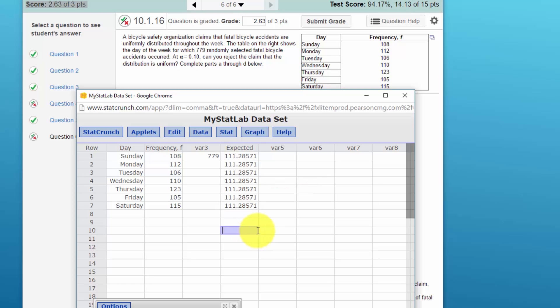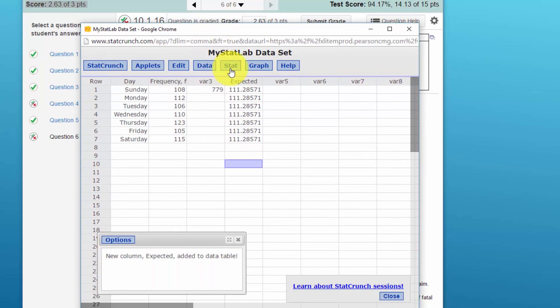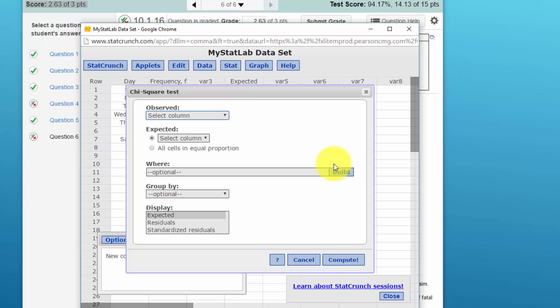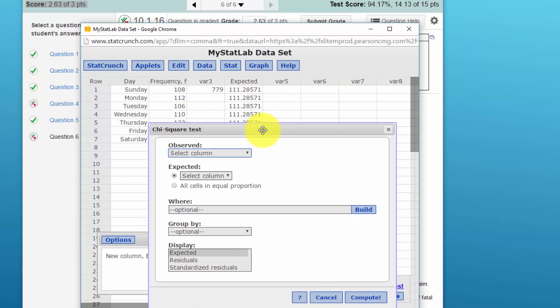So we go to stat, goodness of fit, chi square test. Our observed column is frequency, our expected column is expected, and I'm not going to worry about the other settings on this test because we just want the basic. Click on compute.